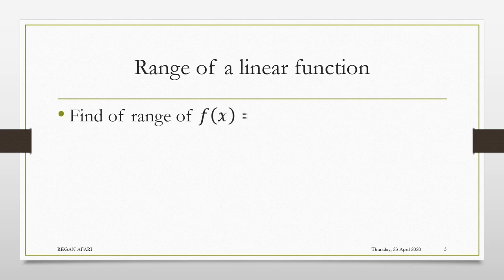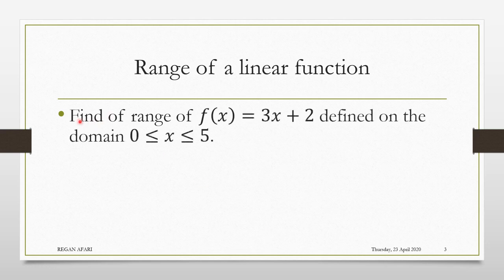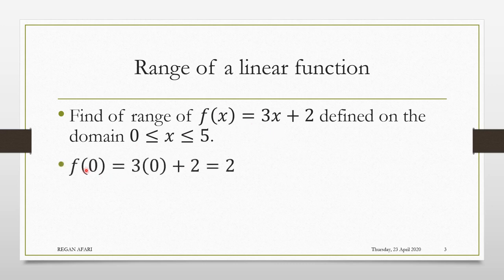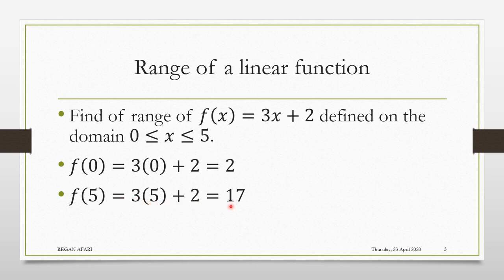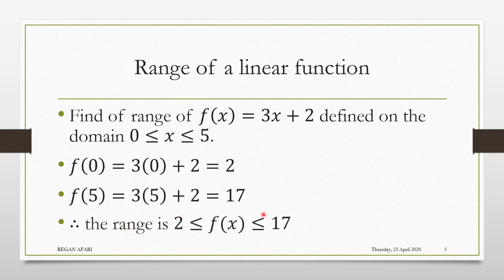Let's consider another example. Find the range of F of x if the function is defined as this, based on this domain. Like we did in the first example, we will put the first extremity, which is 0, into the function to see the output it will give us. An input of 0 gives an output of 2. An input of 5 gives an output of 17. So the range of the function is F of x is greater than or equal to 2 and less than or equal to 17.